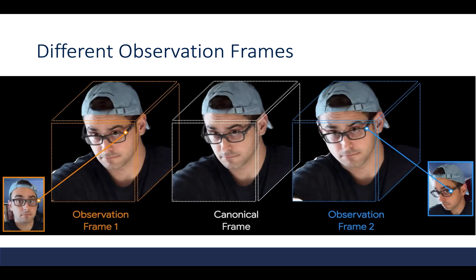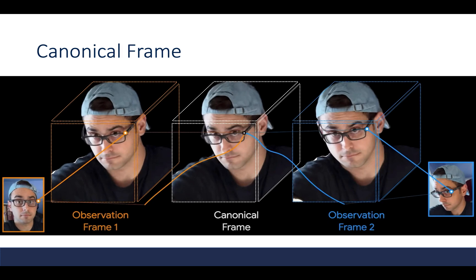So when we unroll the operation, we can view this as there are two observation frames, each for frame 1 and frame 2, and these two frames should be mapped into a canonical frame where these two points should eventually intersect, as shown in this figure.